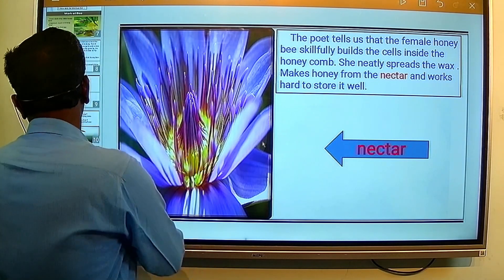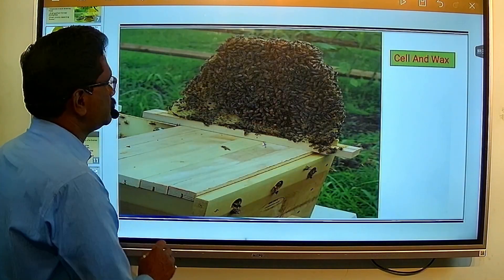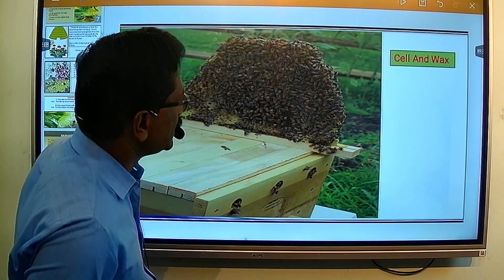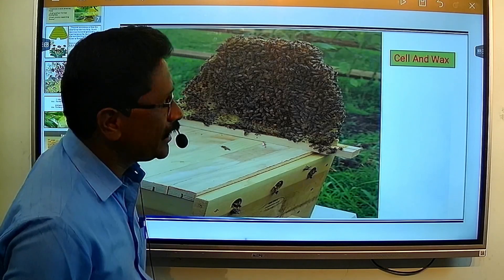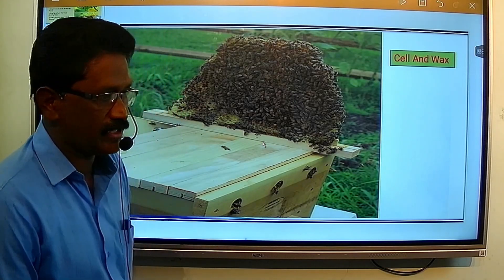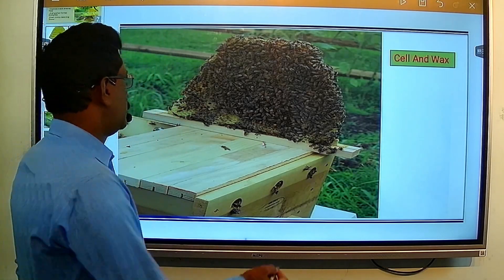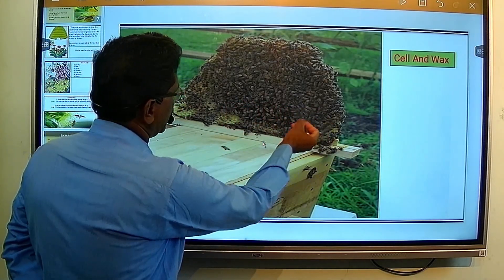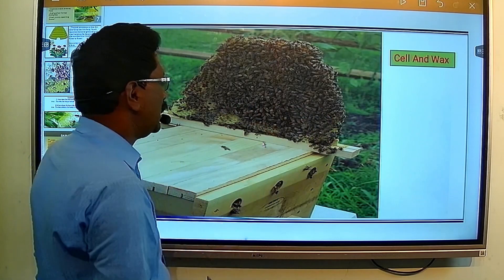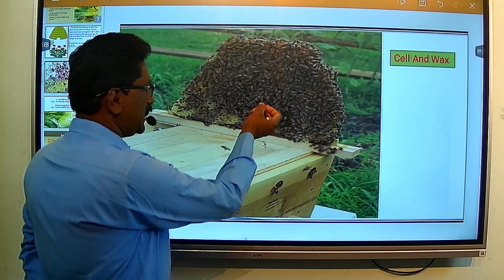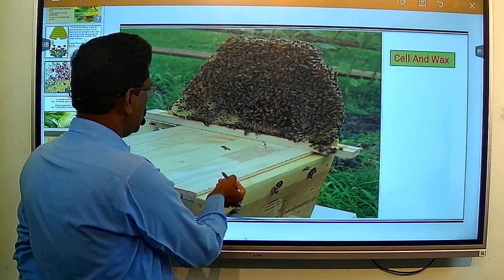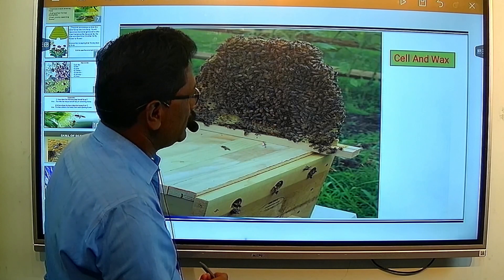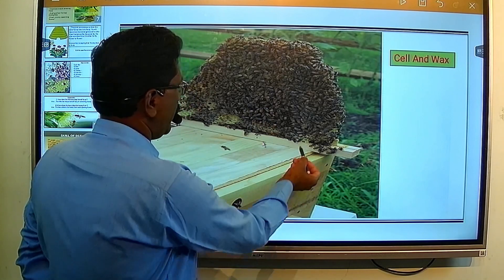Let's see the next slide. Here, the slide shows us the cell and the wax. Honeybee collects honey from nectar and stores it into the cell. The slide shows the cell and the wax.